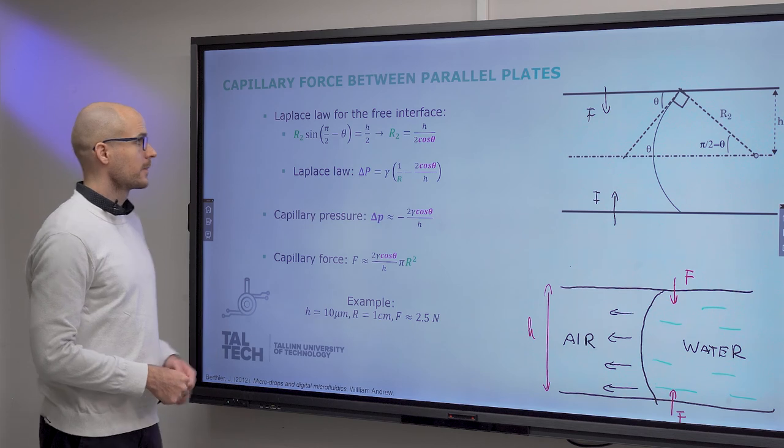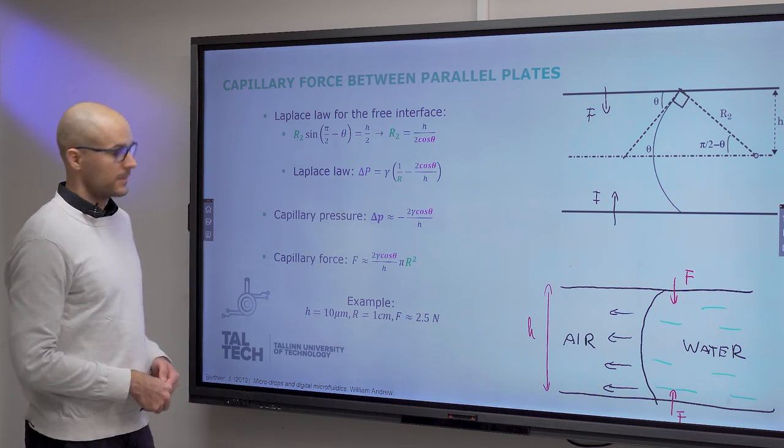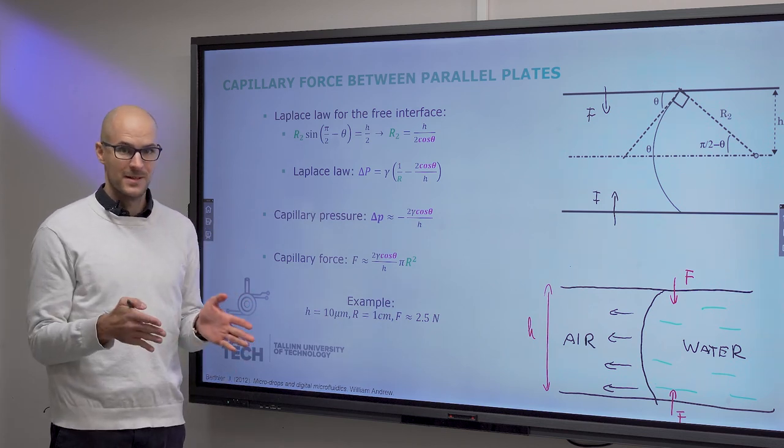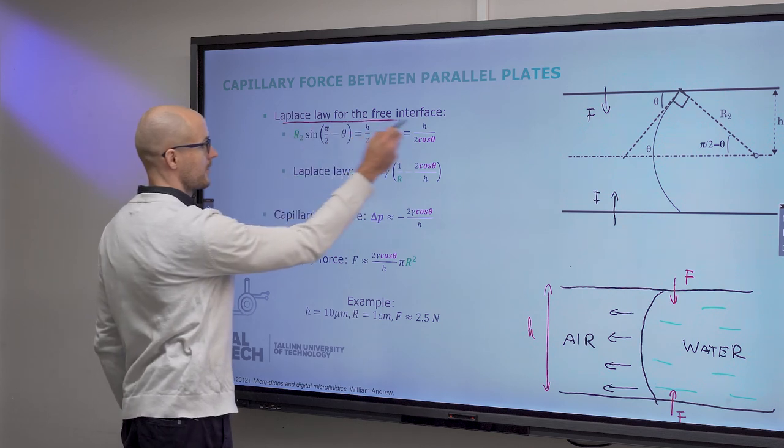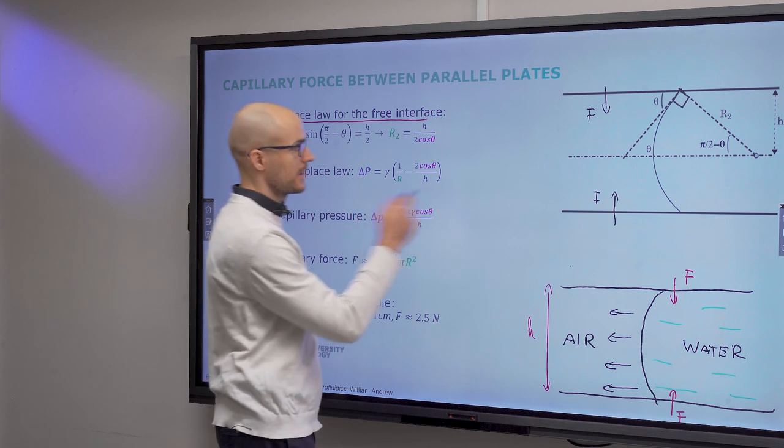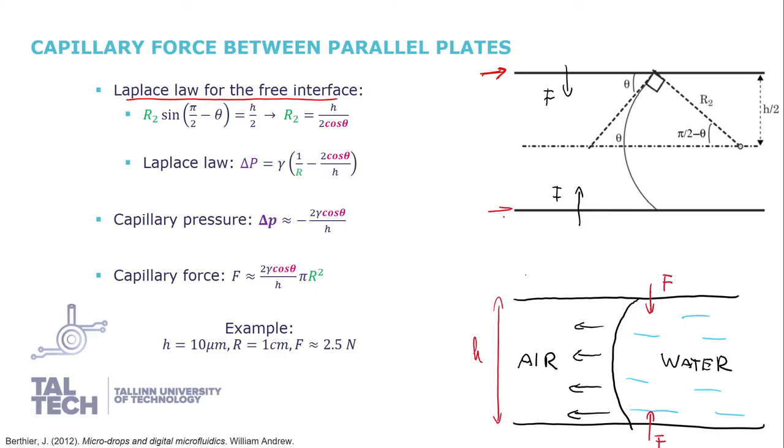Then capillary forces between parallel plates. Why is this important? It's important because you can perceive or conceive of the channels as parallel plates. So the Laplace law for the free interface between these plates is defined as such. We will get to that in a moment. So you have plate one, plate two, and the forces of adhesion acting on your liquid. This is the meniscus. And there are these contact angles between the midline and the wall. And then this is the radius of this meniscus. And this is the height, half height of your pipe or your channel.